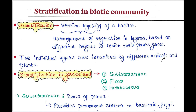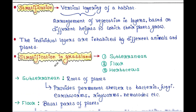Basically, stratification is the vertical layering of a habitat. The arrangement of vegetation in layers based on different heights to which the plants grow is called vertical layering. The individual layers are inhabited by different animals and plants.